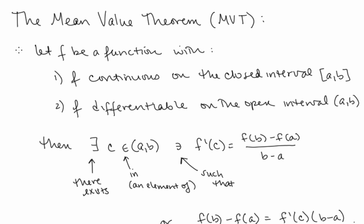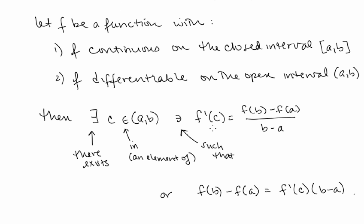The Mean Value Theorem says that if we have a function f that is continuous on the closed interval [a,b] and differentiable on the open interval (a,b), then there exists a c in the interval (a,b) such that f'(c) is equal to [f(b) minus f(a)] over [b minus a]. This last statement can also be written as f(b) minus f(a) equals f'(c) times (b minus a). This is very useful in more advanced mathematics because it allows us to rewrite an expression or a difference using a derivative.